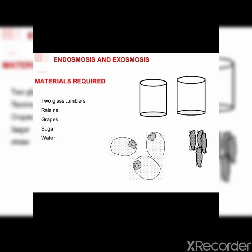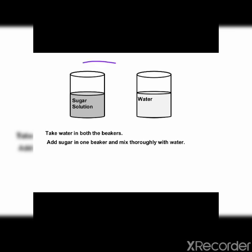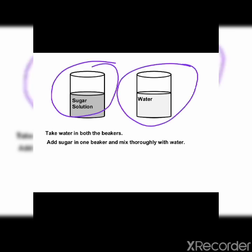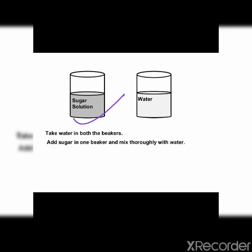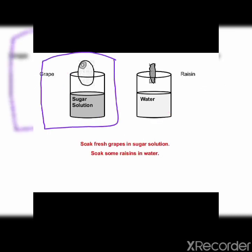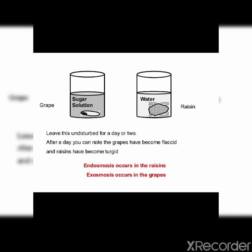With the help of one experiment, we will try to understand this. We take two glass tumblers, raisins, grapes, sugar, and water. In both the beakers we will take water, and then in one beaker we will add sugar and mix it thoroughly. After that, we soak fresh grapes in the sugar solution and we soak some raisins in plain water. We leave these two beakers for a day or two. After a day, we can see that the grapes have become flaccid and the raisins have become turgid.